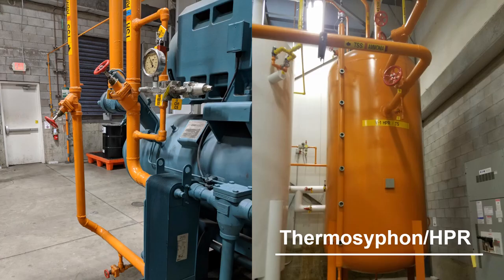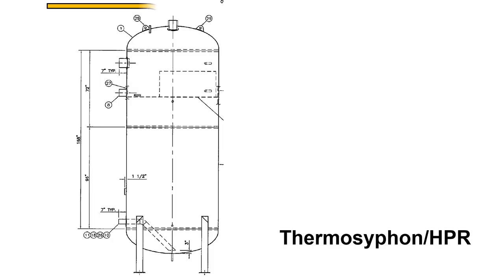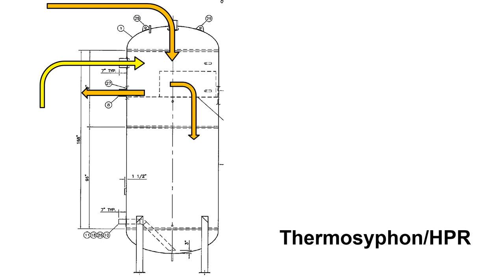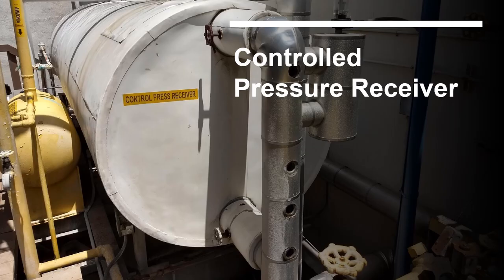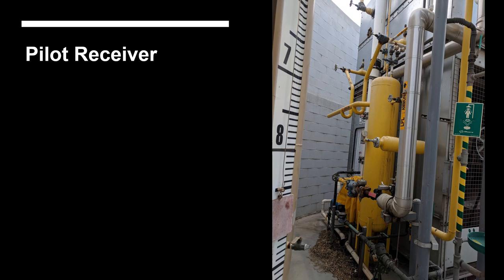A variation of a standard high pressure receiver is the combination thermosiphon high pressure receiver. In this arrangement, the vessel has an internal chamber located near the top of the vessel. Liquid from the condensers flows into the top of the vessel and collects inside the thermosiphon chamber so that it can be supplied to the oil coolers. Overflow from the thermosiphon chamber collects at the bottom of the vessel, which serves as a standard HPR. Another variation is the controlled pressure receiver, which operates at an intermediate pressure between the compressor discharge pressure and the suction pressure. Smaller systems may be configured with a pilot receiver; since pilot receivers are physically small, they generally cannot hold the system charge, and the level is maintained through the use of a float valve.